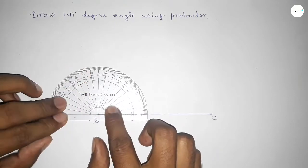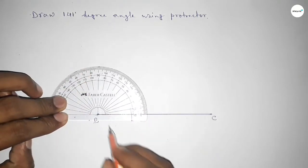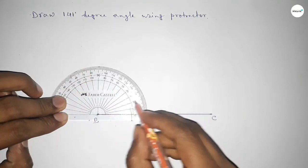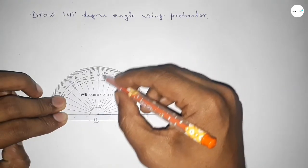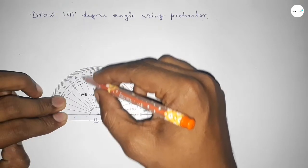Then counting the angles. So this is starting angle: 0, 10, 20, 30, 40, 50, 60, 70, 80, 90, 100, 110.